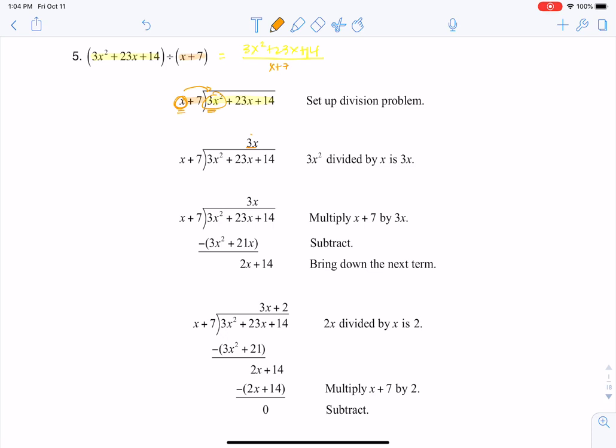From long division, you always take whatever is here and multiply it into your divisor. I have to distribute that, so 3x times x plus 7 is 3x squared plus 21x.